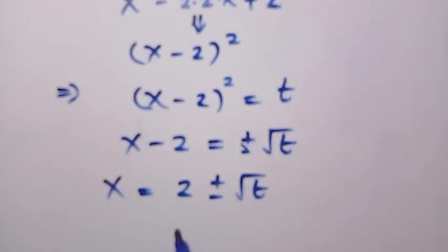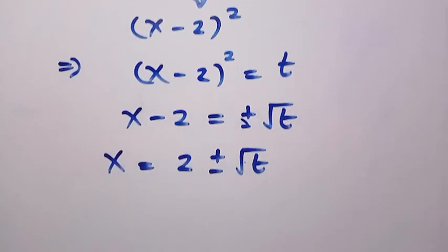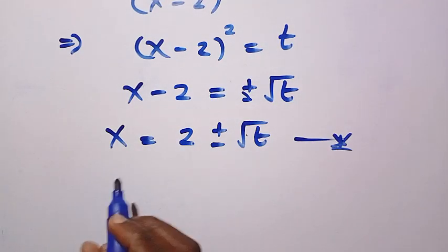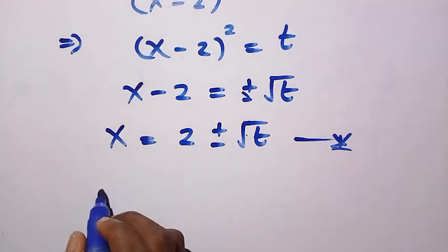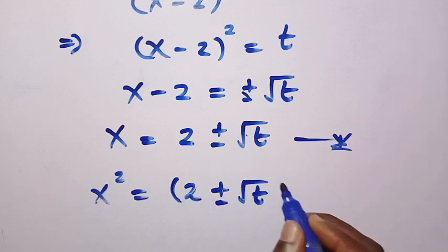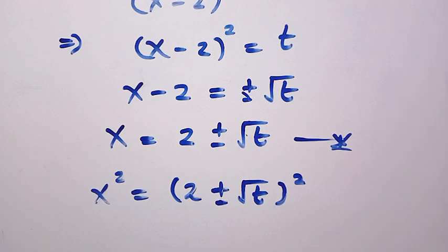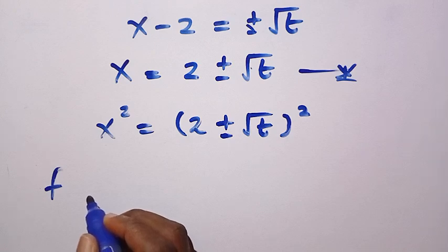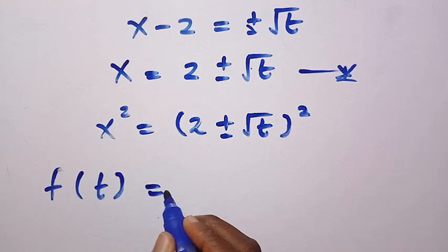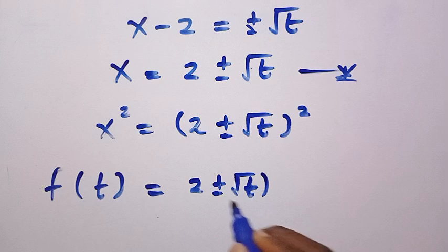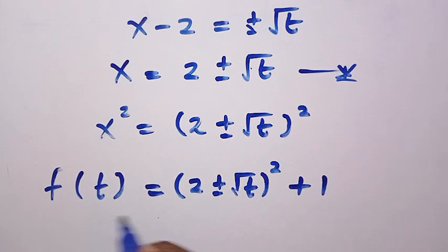From the right-hand side of the given problem we have x squared. To get x squared, we square both sides: x squared equals (2 plus or minus the square root of t) all raised to the power of 2. Substituting back into the function, f of t equals (2 plus or minus the square root of t) squared plus 1.